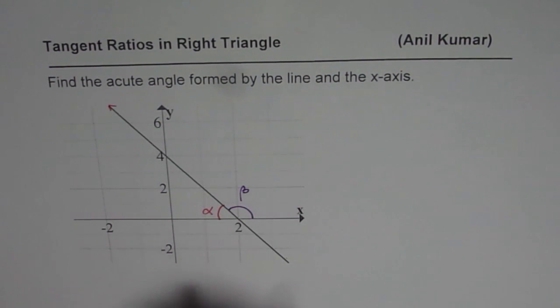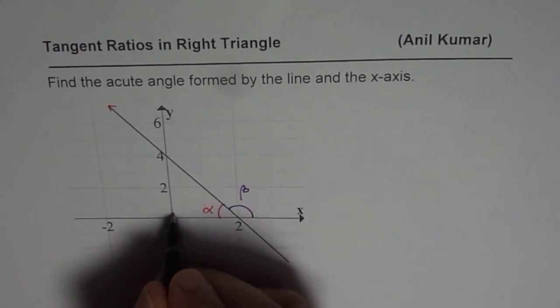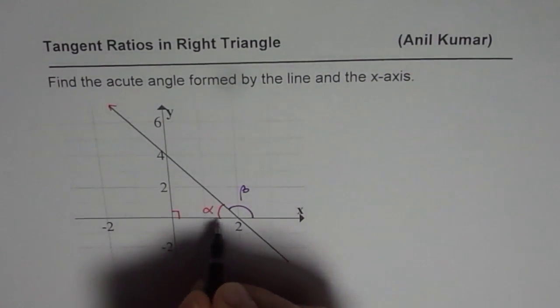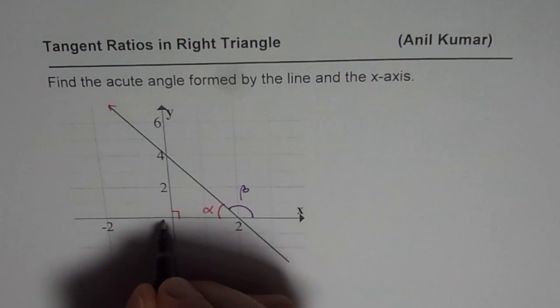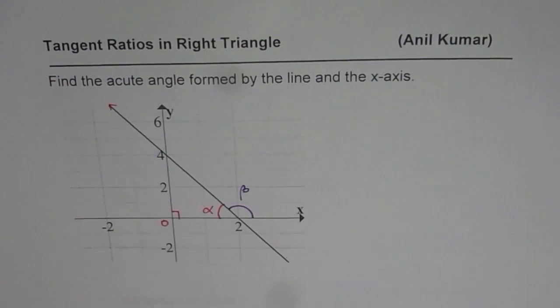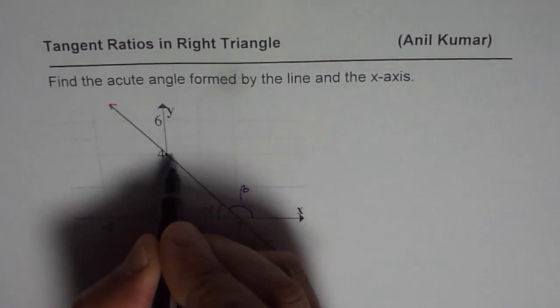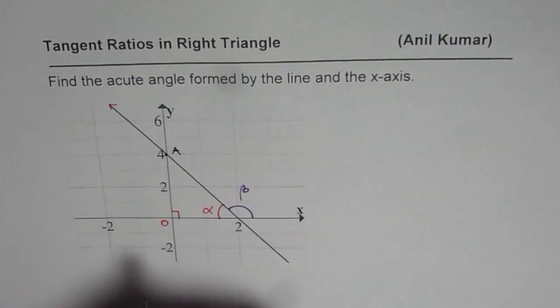Now in this particular situation you find that we have x and y axes, they intersect at origin O. So we have a right triangle. Let us label this right triangle with y-intercept at 4. Let it be point A.